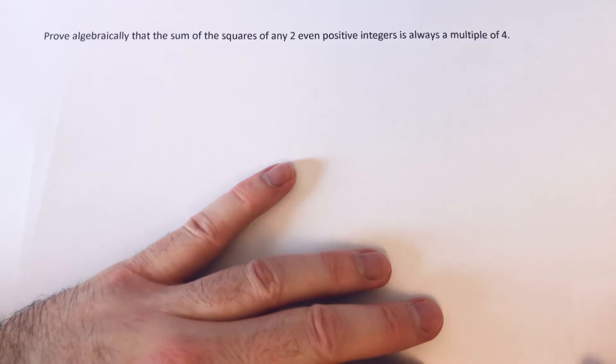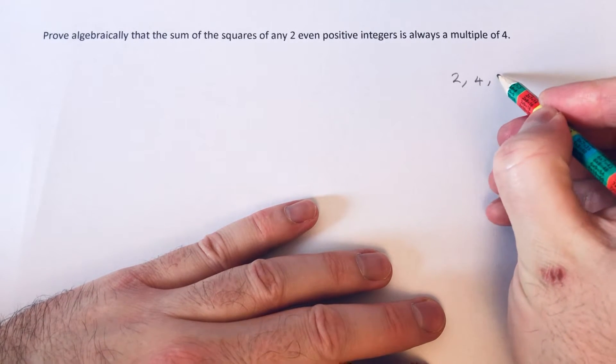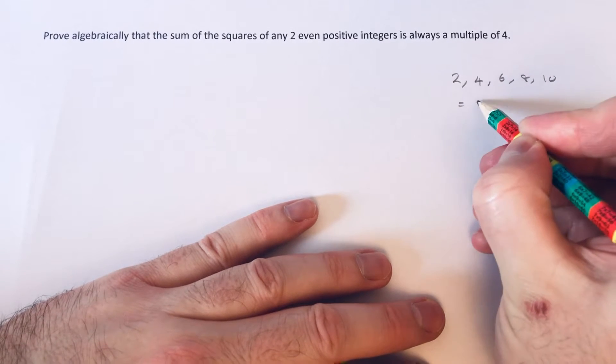Now before you start these types of proofs, you need to know that the even number sequence 2, 4, 6, 8, and 10 has an nth term of 2n.